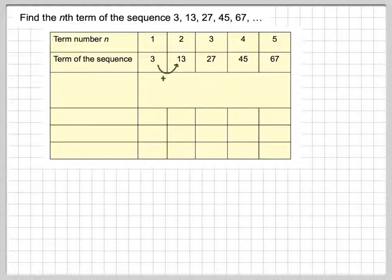Now we look for the differences. So from 3 to 13, you add 10. From 13 to 27, you add 14. From 27 to 45, you add 18. From 45 to 67, you add 22.